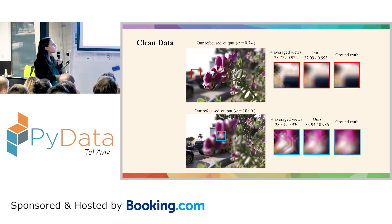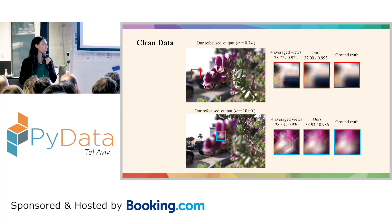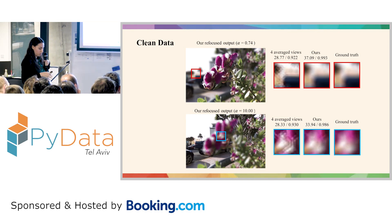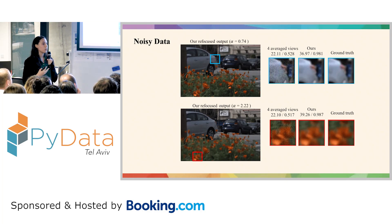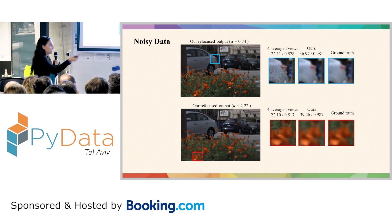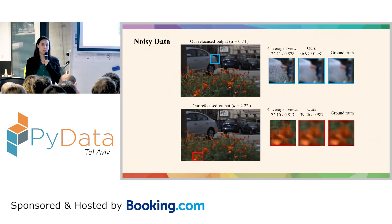These are the results on clean data. You can see that the network corrects the artifacts and the results appear very close to the ground truth images, shown here at two different focus points. We also trained the network on noisy data using noise augmentation, so the network now had two tasks: refocus the image and clean the noise. The results are also very good, and using metrics of PSNR or SSIM you can see the improvement in numbers.